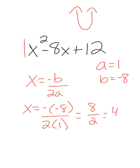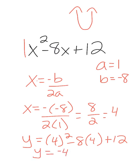Then I'm going to substitute it back in and find Y. To find Y, I have 4 squared minus 8 times 4 plus 12. So I get Y equals negative 4. This point down here is at 4, negative 4.